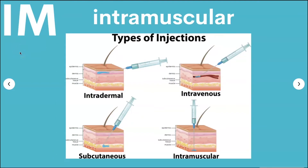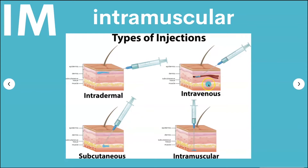IM stands for intramuscular — 'intra' means in the muscle. These are types of injections, and it's important that you deliver medication in the appropriate route. Intradermal we already covered. Intravenous is inside the vein. Subcutaneous is in the fat tissue. IM goes deeper — here's the fat layer and then the muscle layer. IM injections are given at a 90-degree angle, going into the muscle.